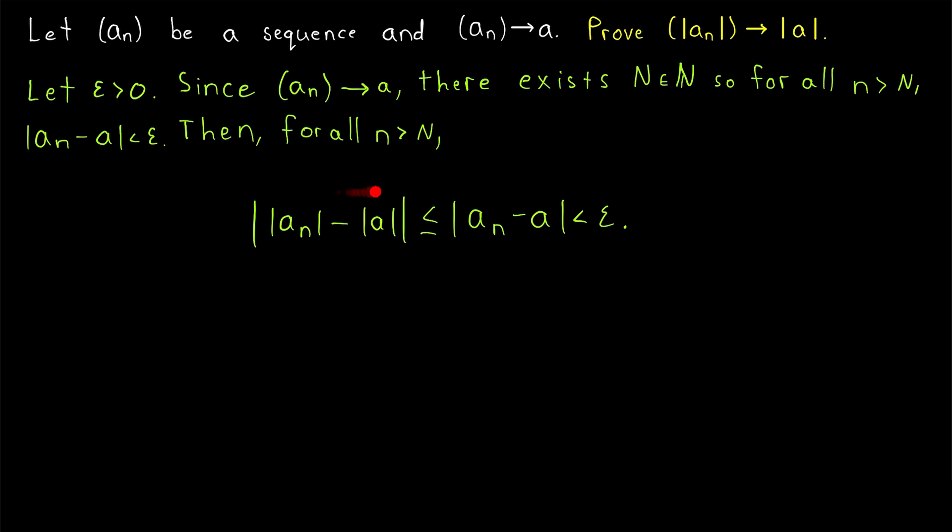And here those details are written out. Since An converges to A, that was our assumption, we know that there exists a number big N, so that for all terms of An after the big Nth term, their distance from the limit A is less than epsilon.